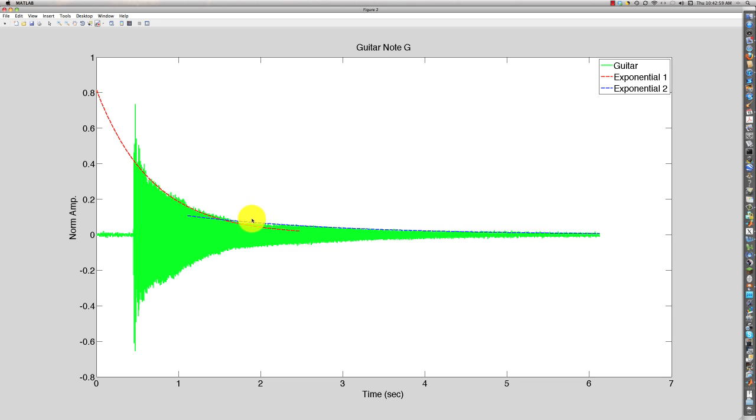So what I did was I fit the envelope of this signal using two different exponentials. So, the decay in this first exponential is greater and then the decay is more gradual in the second exponential. So, the combination of these two does a pretty good job of describing how the amplitude decays.